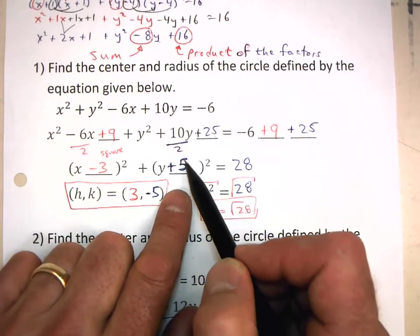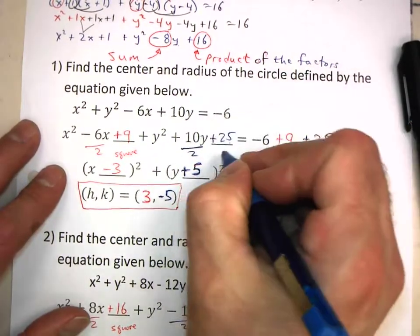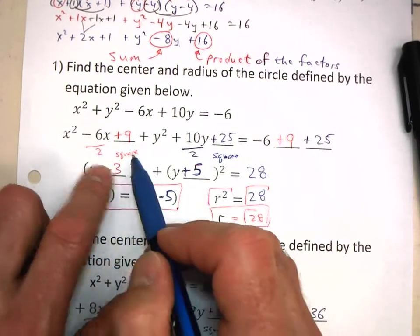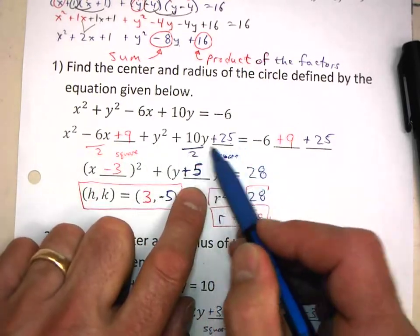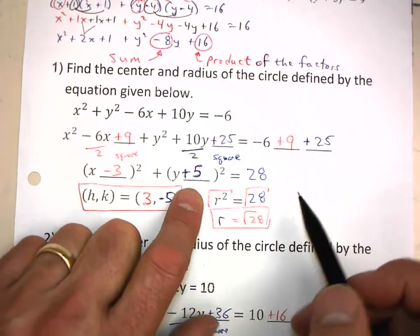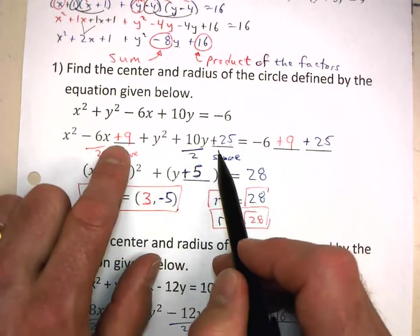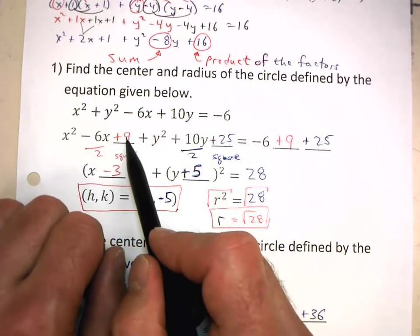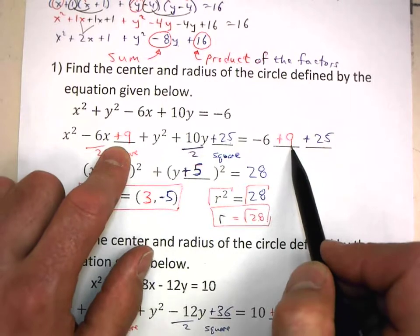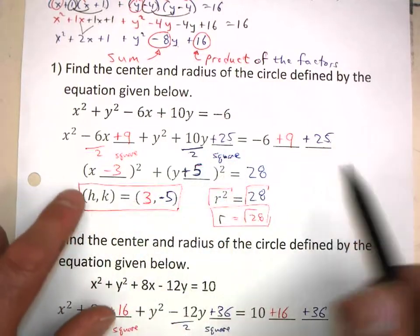So 10 divided by 2 gives you 5. 5 squared — and I should have written 'squared' there. Please do get in the habit of writing the dividing by 2 and then the square to remind yourself how you get these numbers, because it's really easy to forget. So 10 divided by 2 is 5. 5 squared is 25. Also make sure that you're adding those — don't just put the number there by itself, remember this is part of an equation. You're adding 9 to the left, so also add 9 to the right. You're adding 25 to the left, so make sure that you also add 25 to the right.